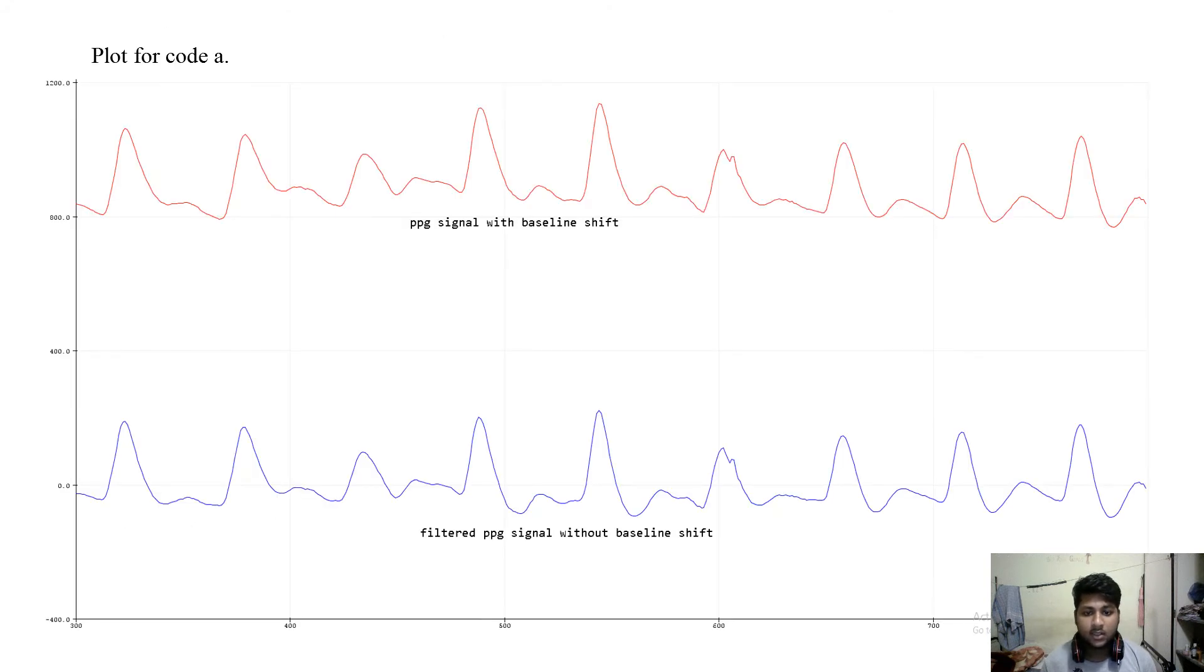As we can see, the above plot is of a PPG signal with a baseline shift and the below blue color signal is of a filtered PPG signal without a baseline shift. This is the plot that we are getting from code 1.